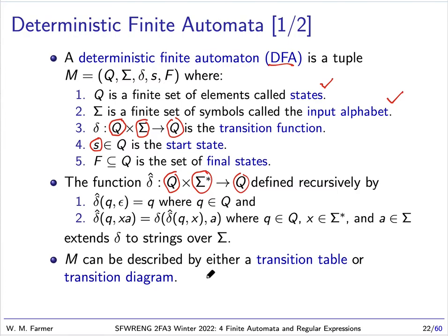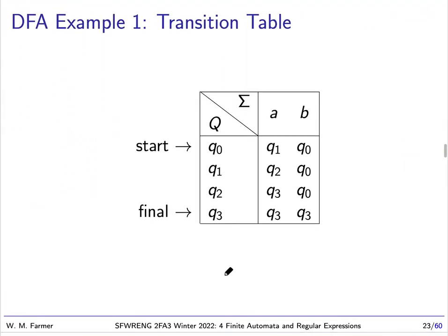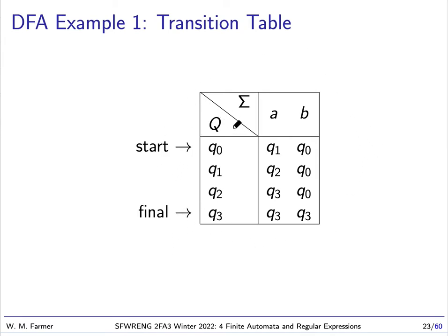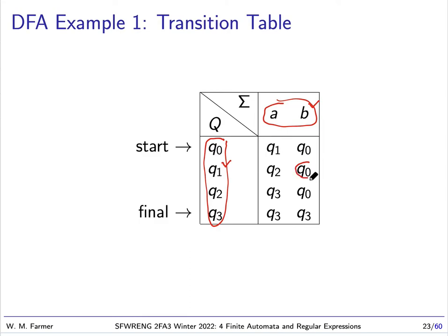A DFA can be described using either a transition table or a transition diagram — both are equivalent. The transition table contains everything we need: the four possible states, the two possible input symbols, the start state q1, and the final state q3. The table gives the transition function — for example, if we're in state q1 and reading symbol b, we end up in state q0.